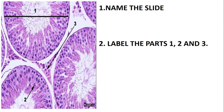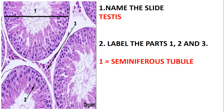The first question is: name the slide. We have been given this slide, and if you look at it, this slide is simply the testis. Label the parts marked one, two, and three. Part one is simply the seminiferous tubule — you can see it runs from here to there. This one is a seminiferous tubule, and that one is also a seminiferous tubule.